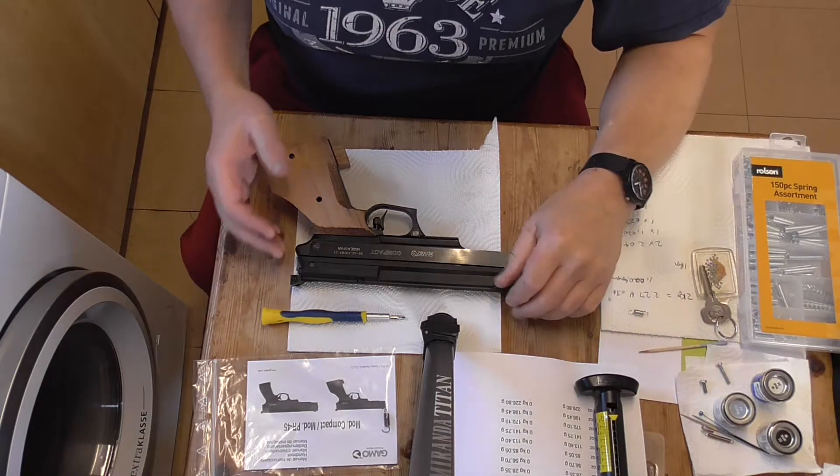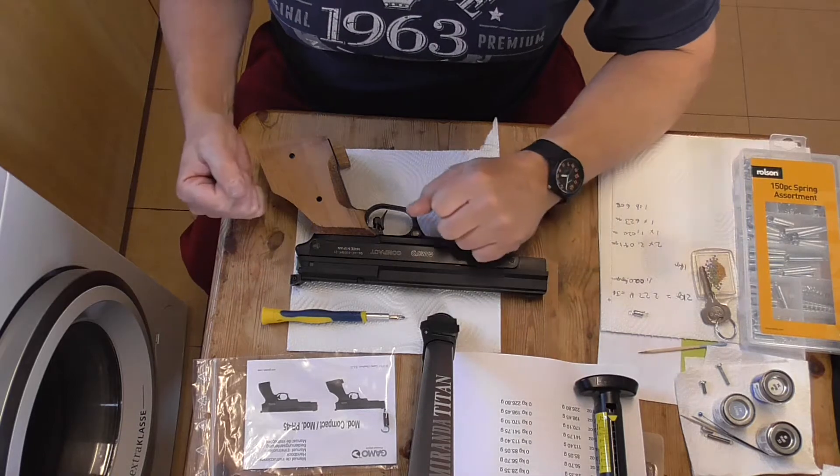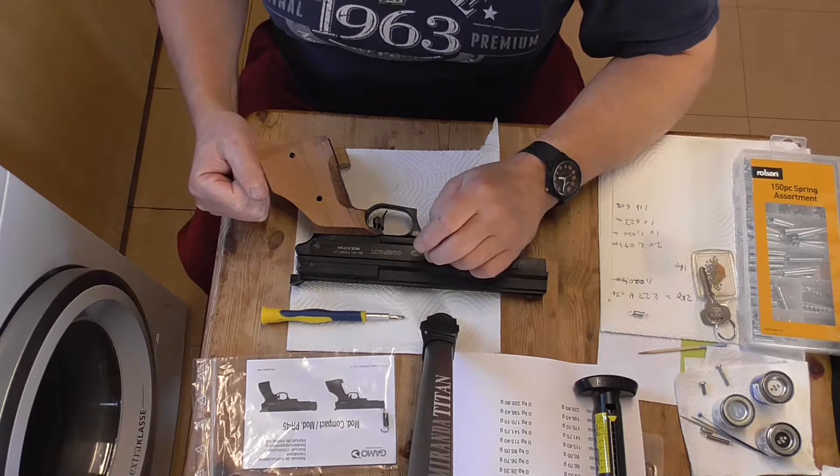Good afternoon. I'm here with my wife's Gamma Compact target pistol, and out of the box the trigger was quite heavy. In fact, it was around 2 kilos, 2000 grams.